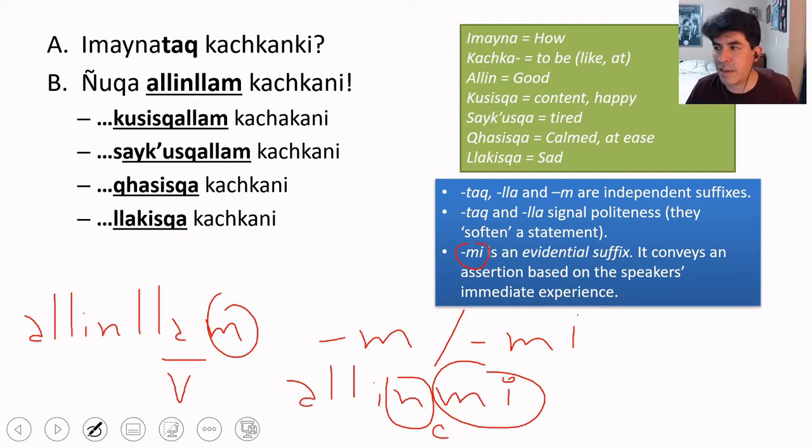What does it mean? Well, it is an evidential suffix. What it does is conveys an assertion based on the speaker's first-hand experience, their immediate experience. So the only thing that you're saying when you say al yin liam is just fine as I can experience. So I am telling you that I'm fine because I know how I feel.